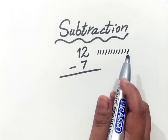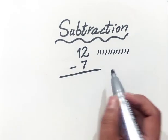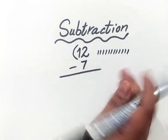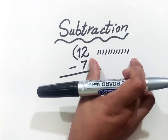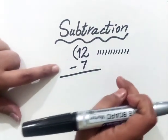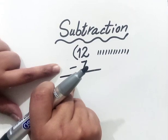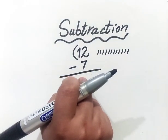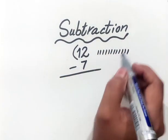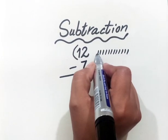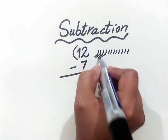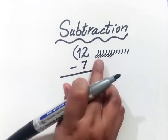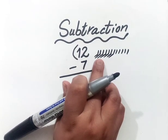Kids, this is the easiest way to subtract two numbers. You have to see the first amount, which is 12 — I have drawn 12 lines. Now the next value: we have to subtract 7 from 12. I'll take away 7 lines: 1, 2, 3, 4, 5, 6, 7. I have taken away 7 lines from 12 lines.